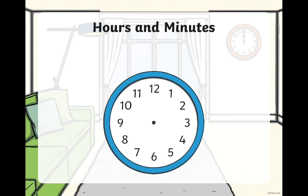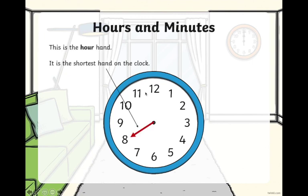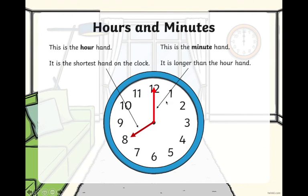Remember, yesterday we did the parts of the clock. We said that this is the face of the clock, and on the face we have numbers from 1 to 12. We also have two hands. One is called the hour hand — it is the shortest hand on the clock. And the other is called the minute hand. The minute hand is longer than the hour hand.